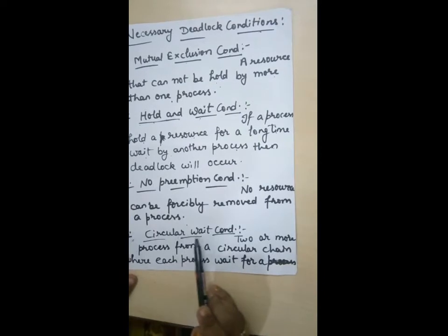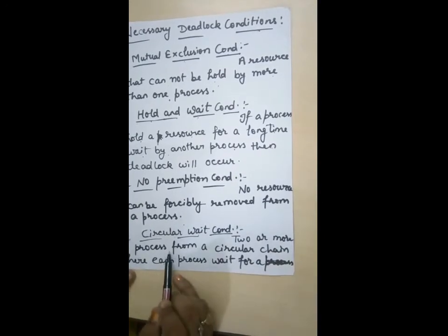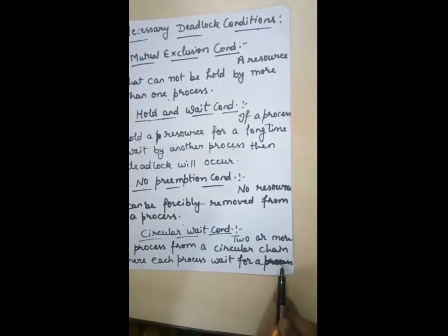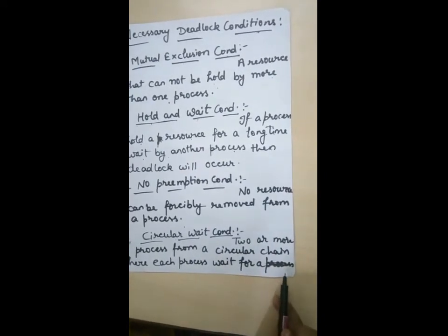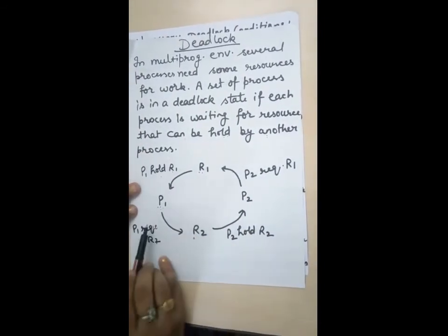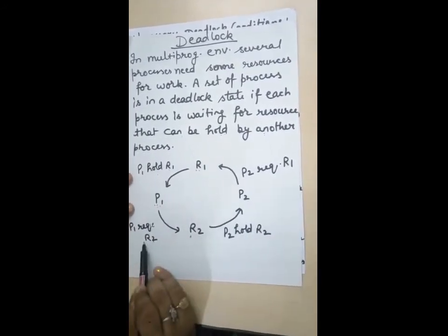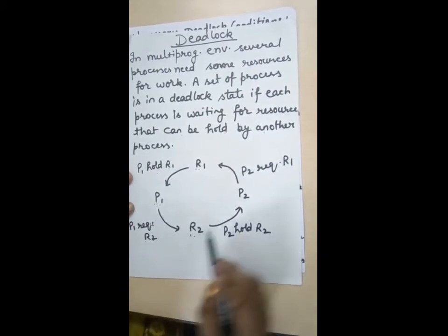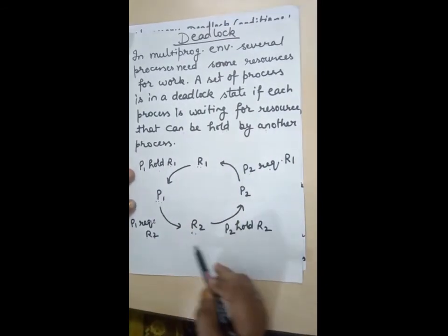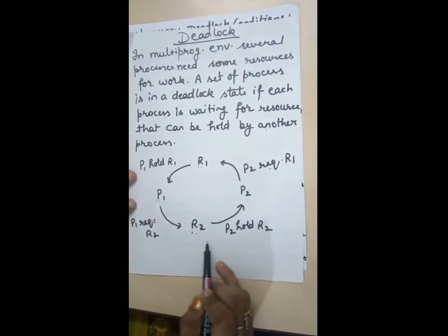The fourth condition is circular wait. Circular wait means two or more processes form a circular chain where each process waits for a resource held by the next. In this diagram, P1 holds R1, P2 holds R2, P1 requires R2, and P2 requires R1 — forming a circular chain. When this circular chain is present, deadlock will definitely occur 100%.